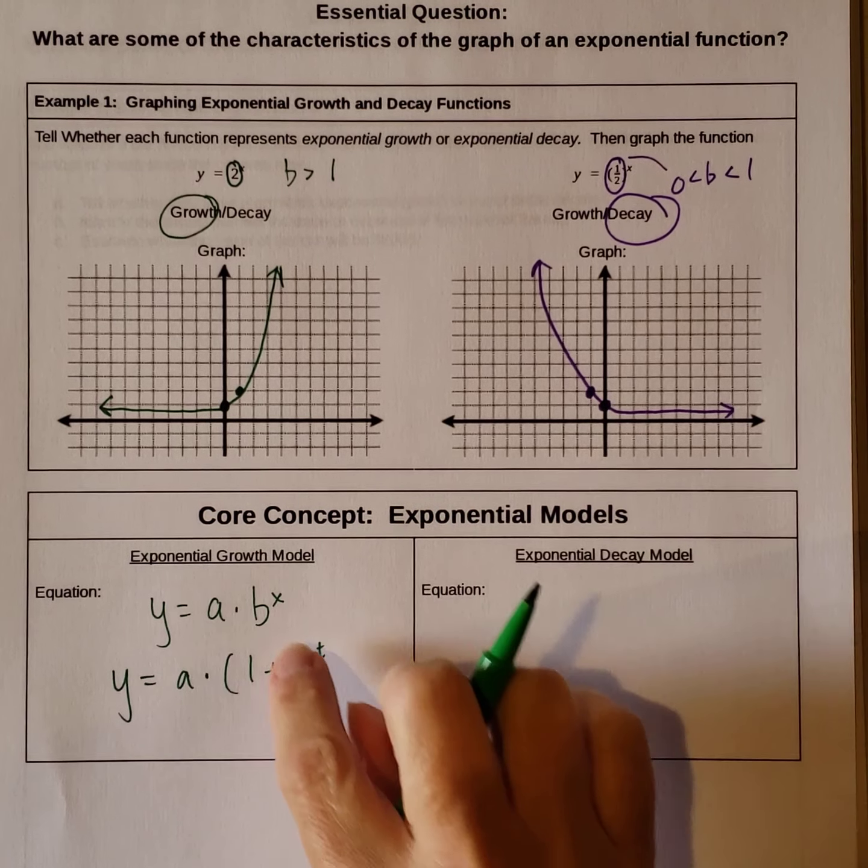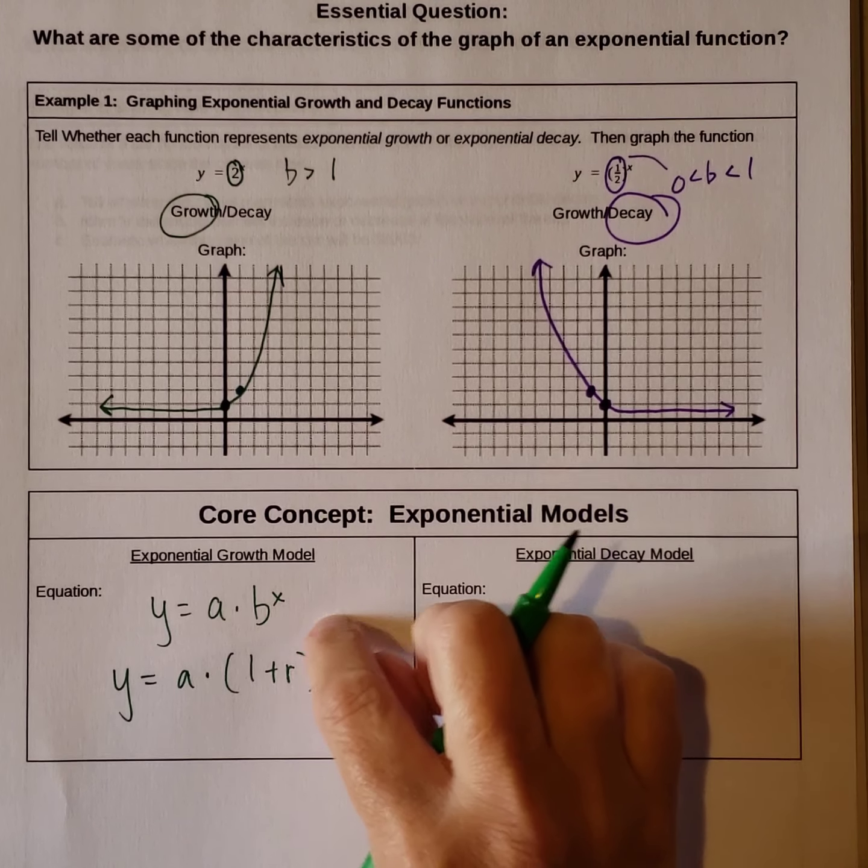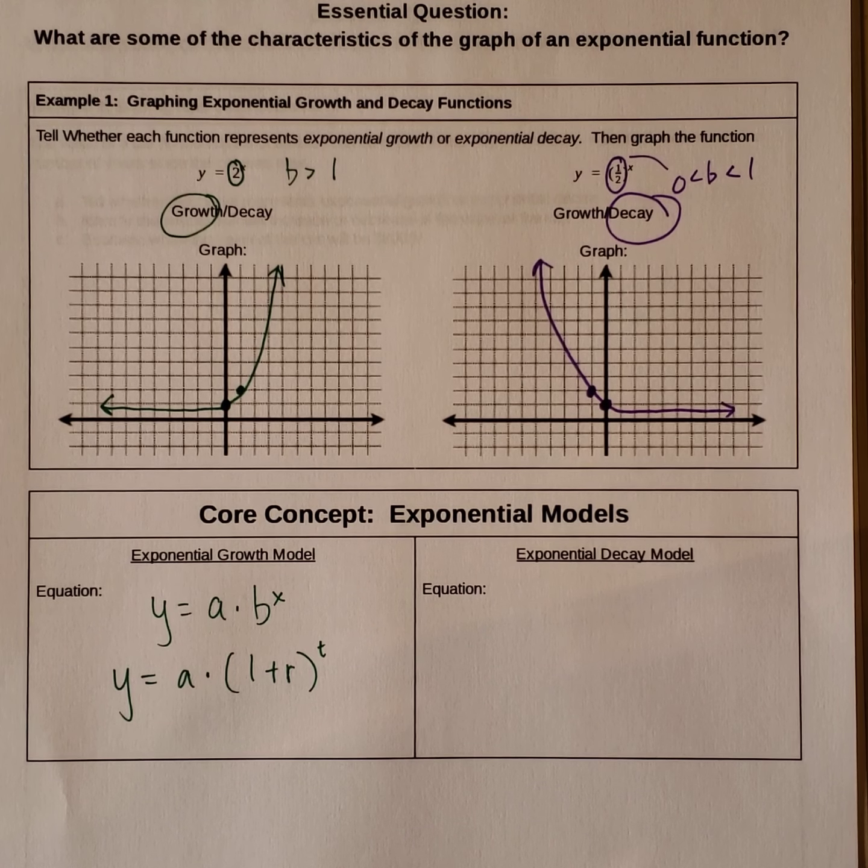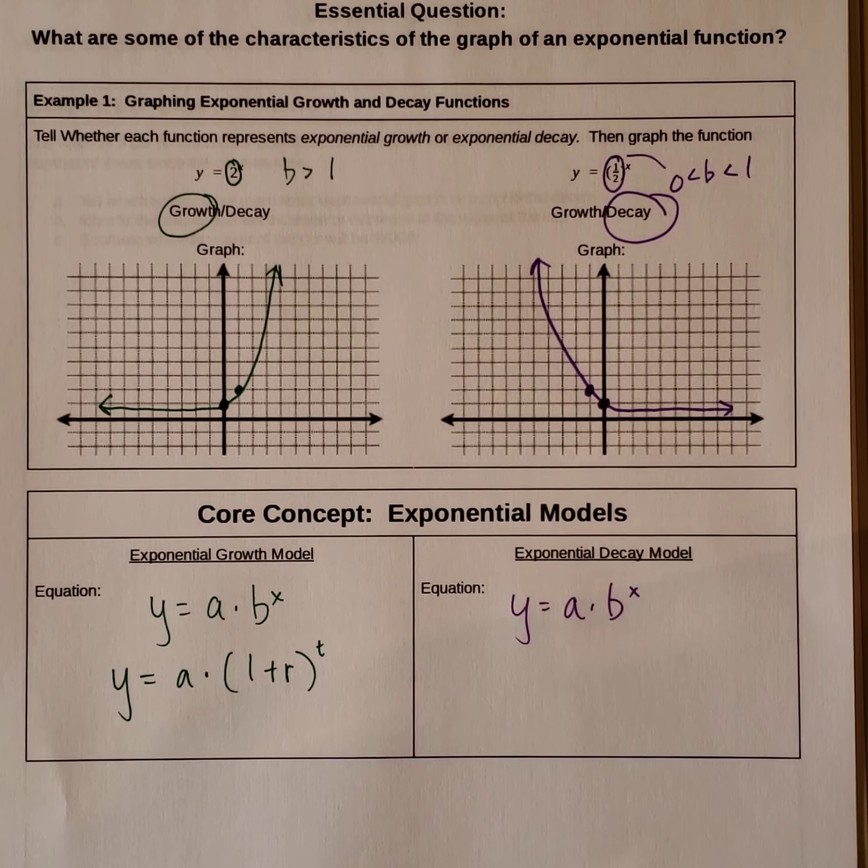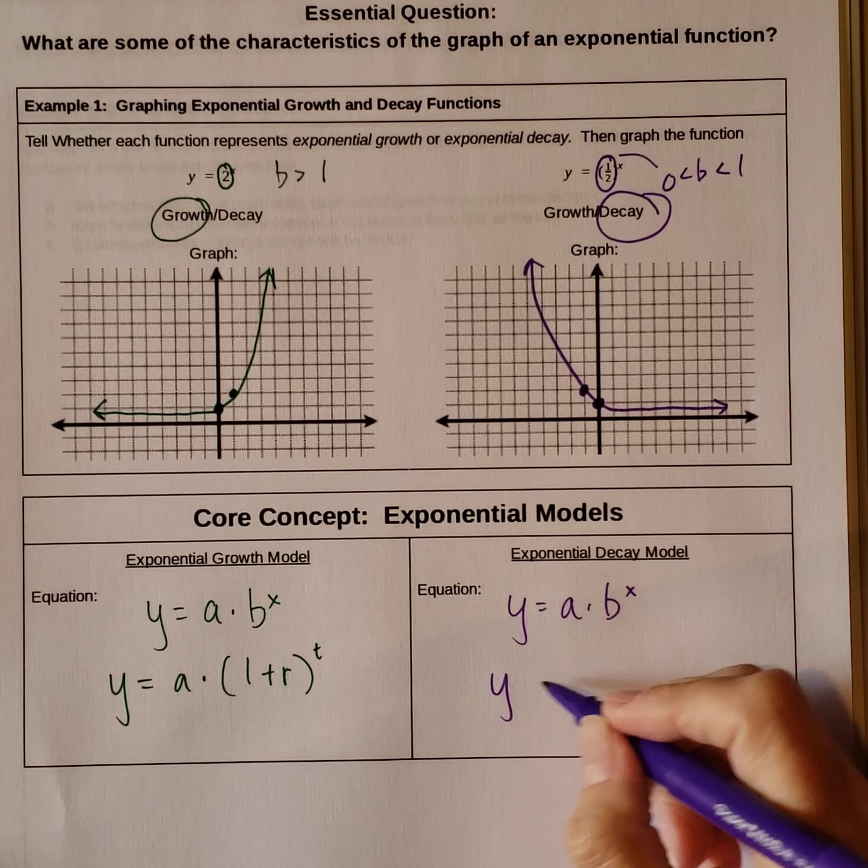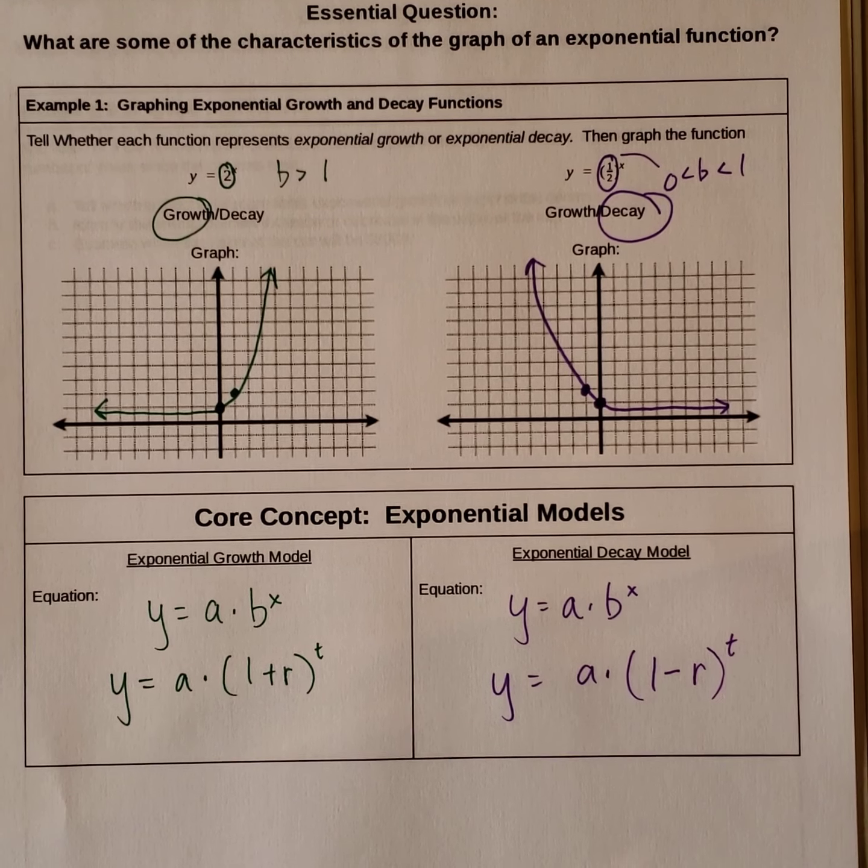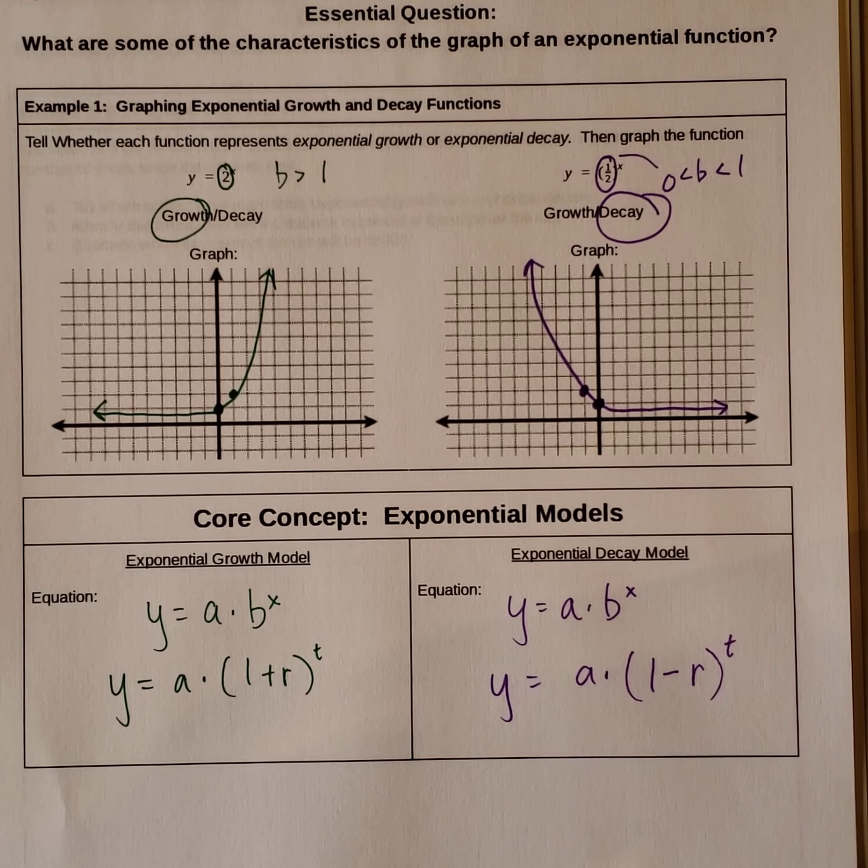And we can say that this is raised to the t in terms of time or x. So decay, starting with the example that we looked at in the previous example, y equals a times b to the x can be rewritten in terms of decay as y equals a times 1 minus r raised to the t. So this helps us to determine how much something is growing or how much something is decaying.